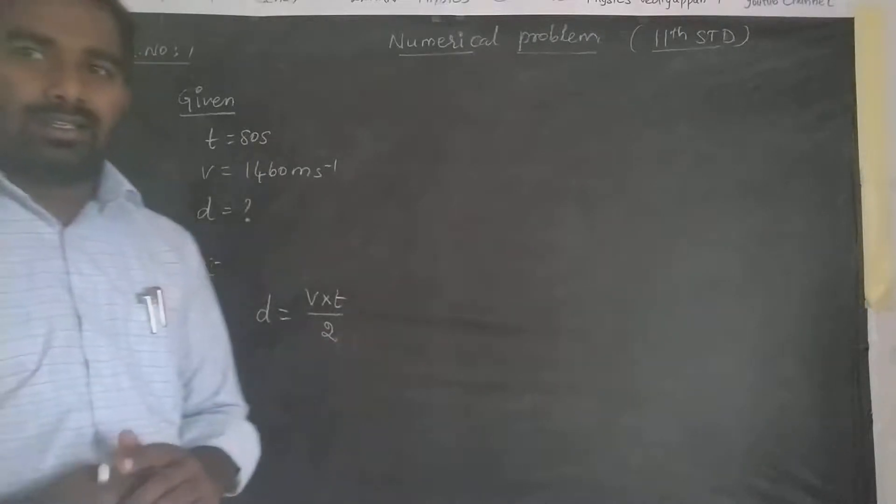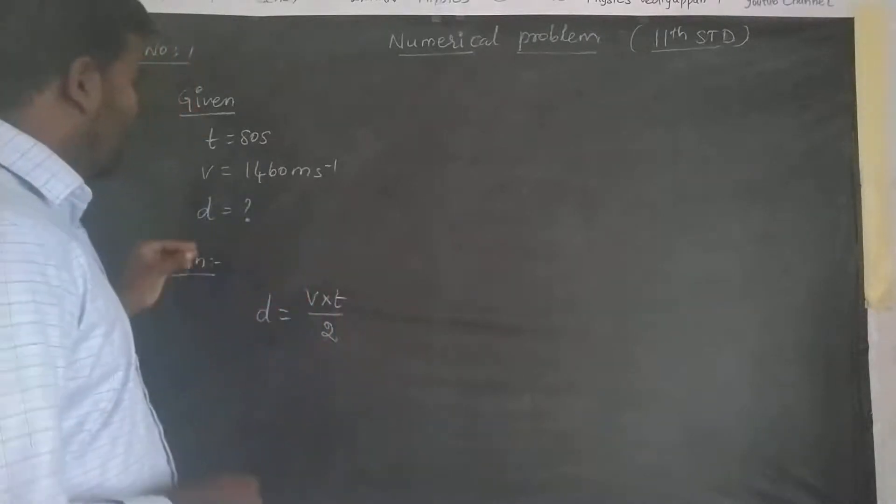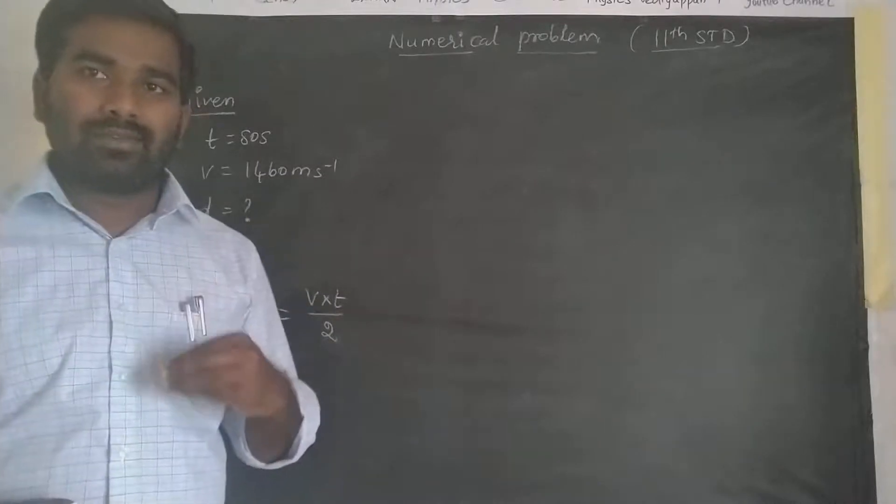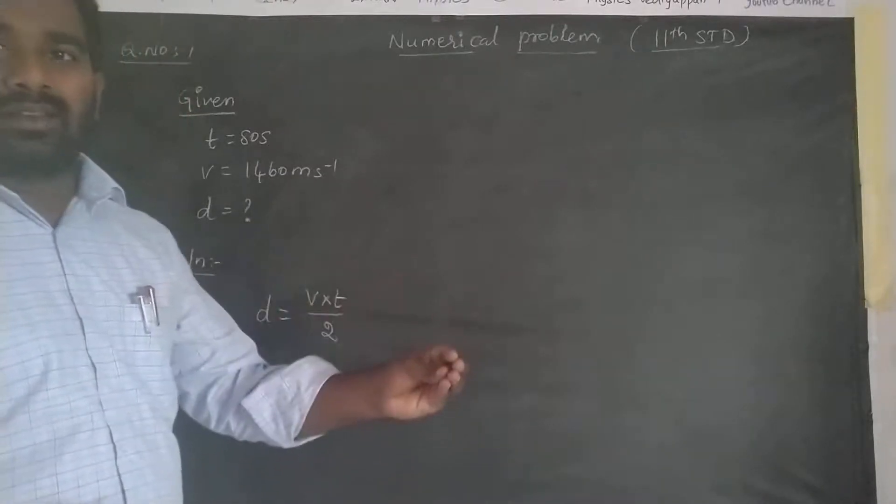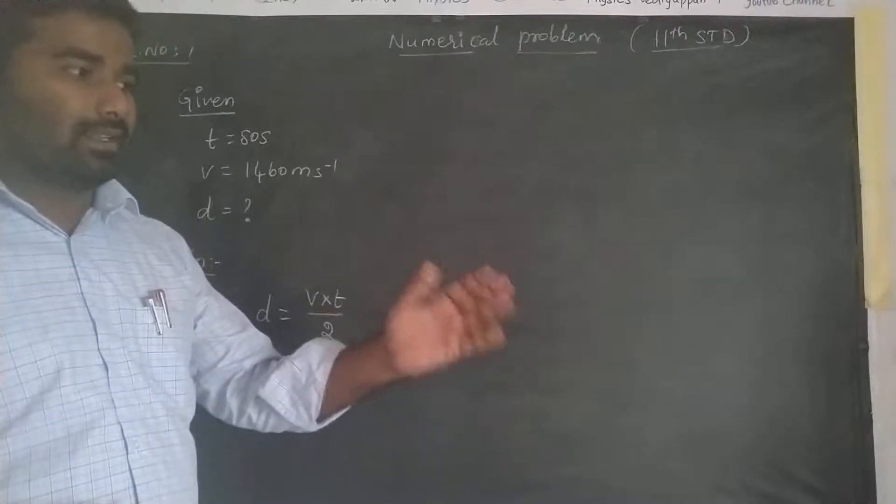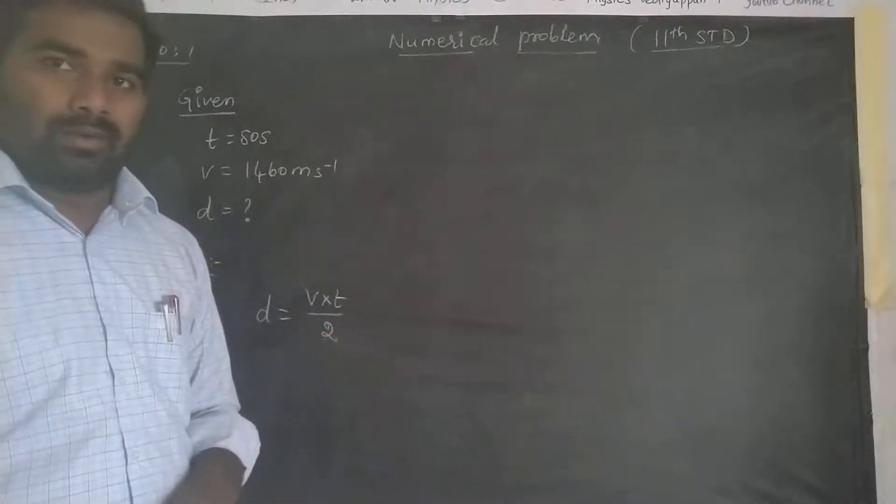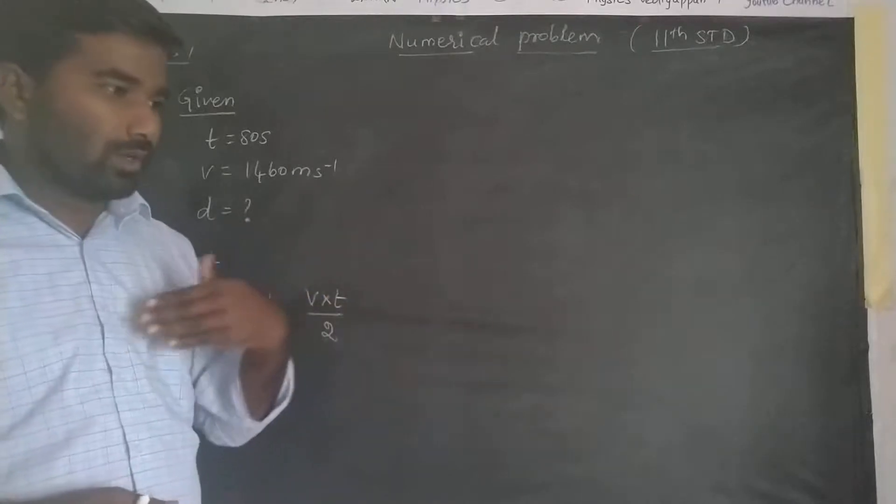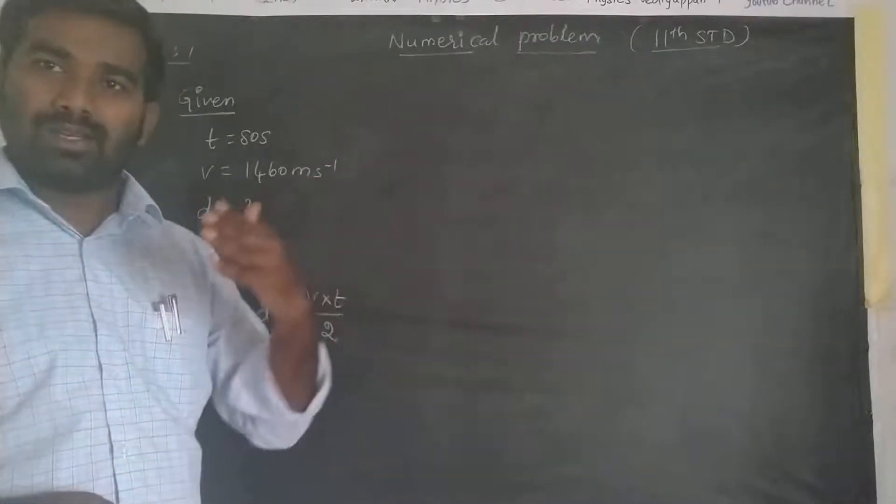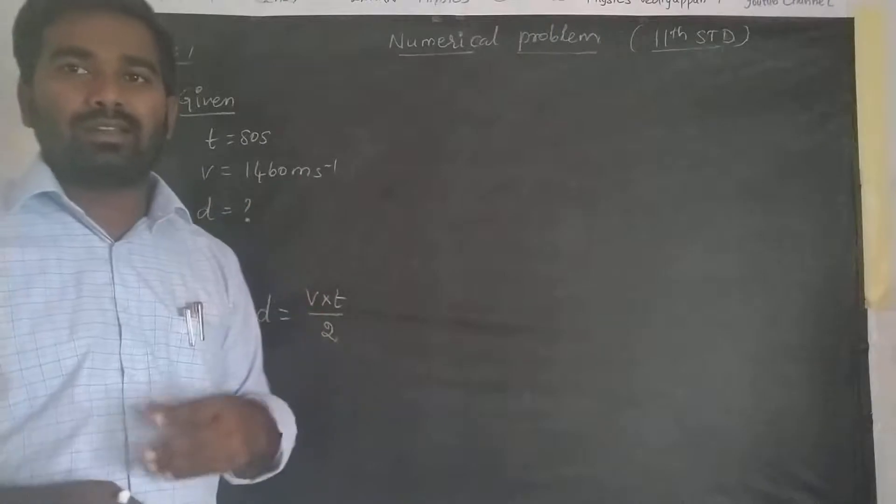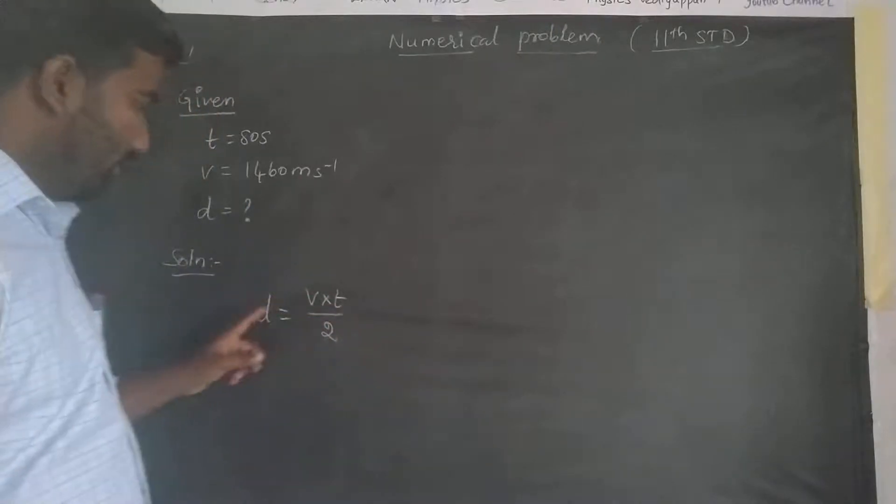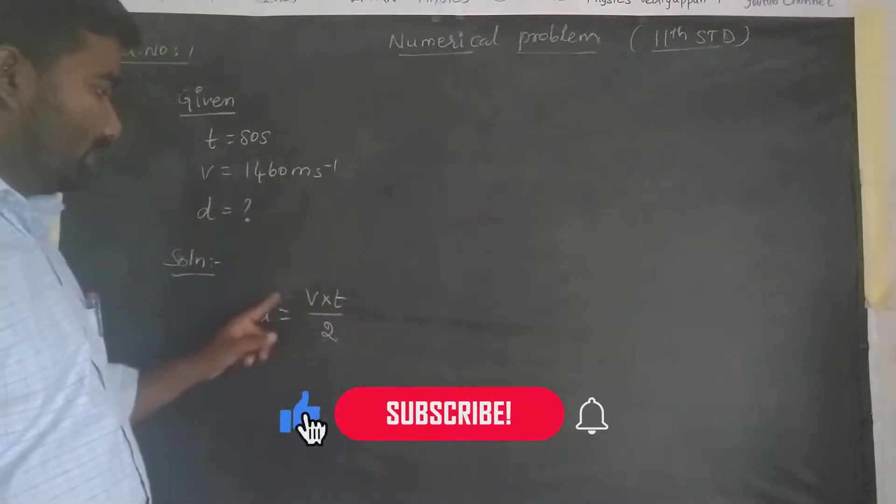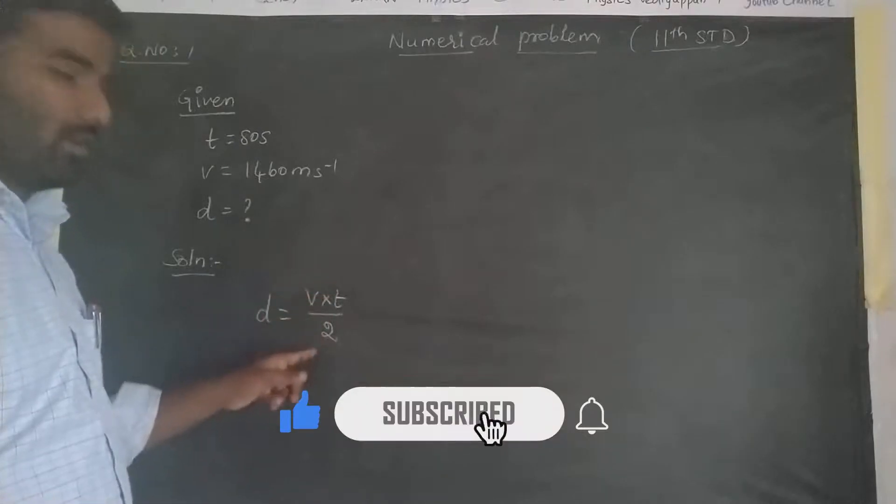The distance is the total path traveled from one submarine to the other. After reflection, it returns from that submarine to the original. So the total distance is 2d. That's why we write 2d is equal to v into t. Therefore, d is equal to v into t divided by 2.